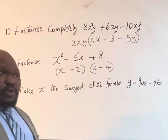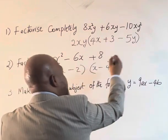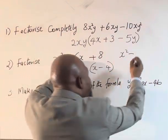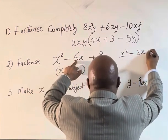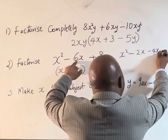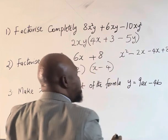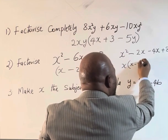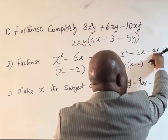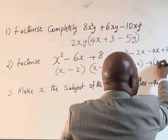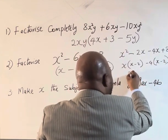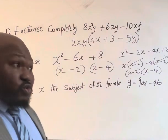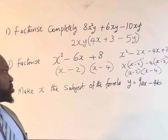There are other ways you can also do it. You can also say s squared minus, instead of six x, you can change this to two x minus four x plus eight. Now let's take out the factors. If you take out x here, you have x minus two. If you take out minus four here, minus four, you have x minus two. And if you look at this, you have x minus two into x minus four.